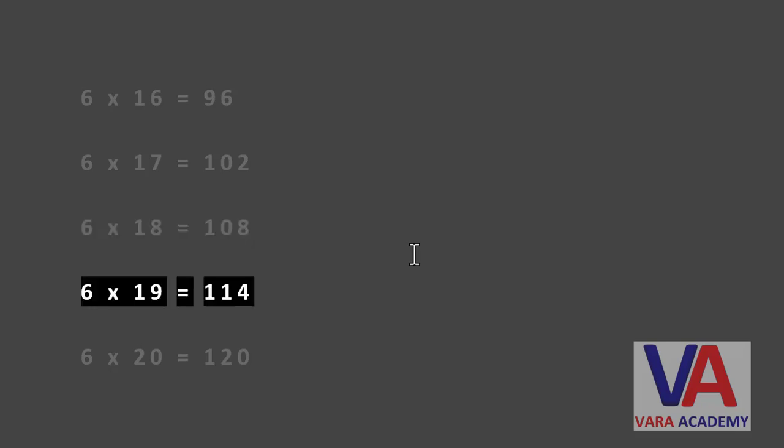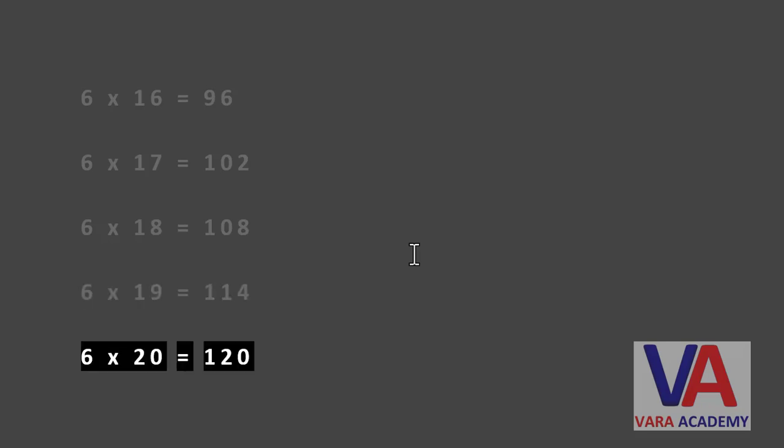Six times nineteen equals one hundred and fourteen. Six times twenty equals one hundred and twenty.